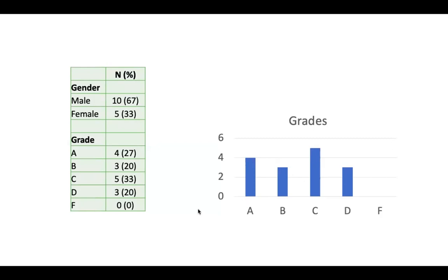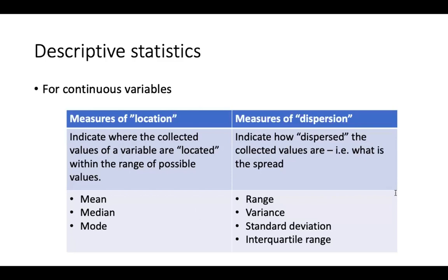For continuous variables, we use different descriptive statistics. We have measures of both location and dispersion. Measures of location indicate where the collected values of a variable are located within a range of possibilities. Measures of dispersion indicate how dispersed the collective values are — basically, the spread across the range. For measures of location we have mean, median, and mode. For measures of dispersion we have range, variance, standard deviation, and interquartile range.